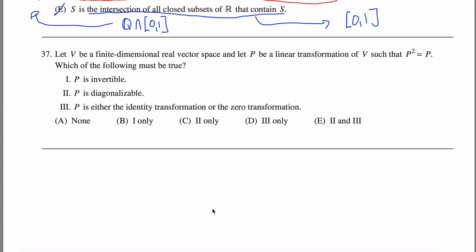All right, problem 37. We're talking about a finite-dimensional real vector space and P is a linear transformation such that if you do P twice, it's the same as doing P once: P² = P. Which of the following must be true?